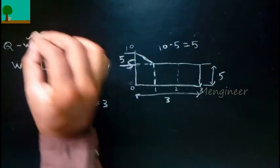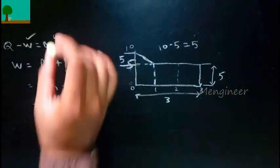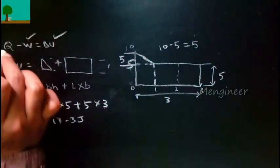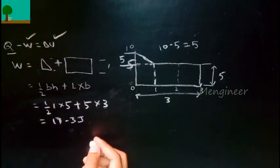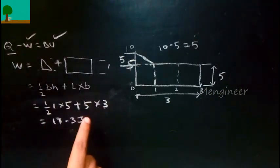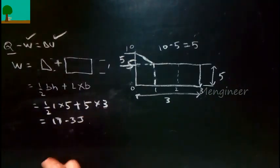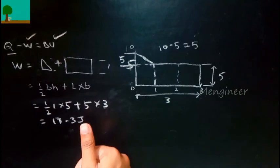You will get the work value. Then in the question they have given the del U value, that is 2.5. So by rearranging, you can find the value of Q. You will get 17.5 Joules. Everything is in Joules here. That's the end of this video. Thank you for watching.